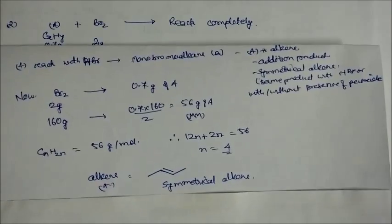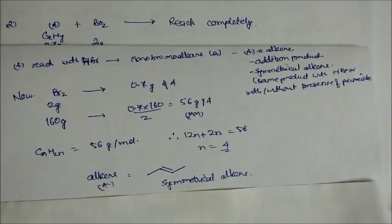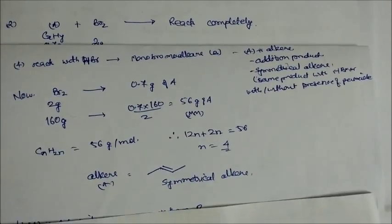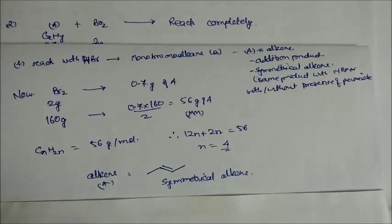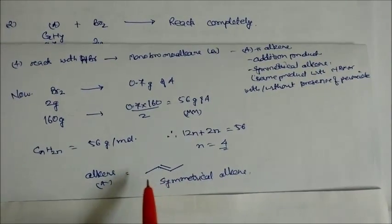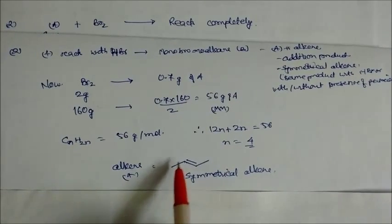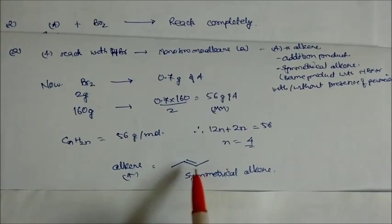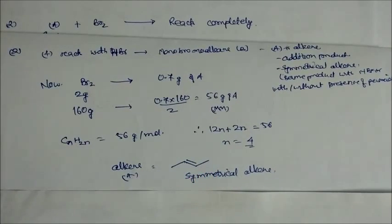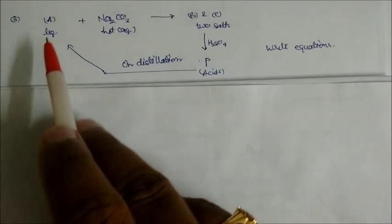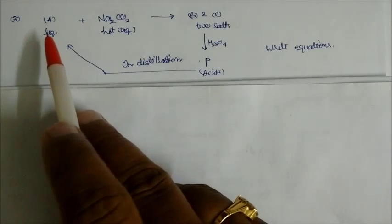So this alkene with 4 carbons — the possible symmetrical alkene is but-2-ene. This is the answer: the compound A is but-2-ene.